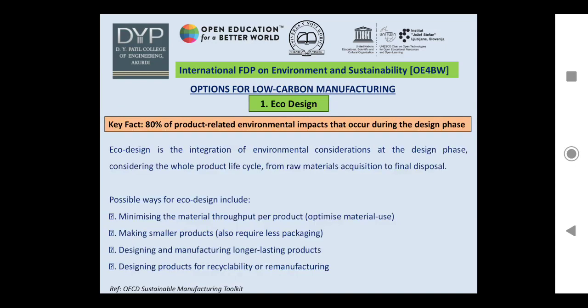The first option is eco design. A key fact is that 80% of product-related environmental impacts occur during the design phase. Eco design is the integration of environmental considerations at the design phase, considering the whole product life cycle from raw material acquisition to final disposal. Possible ways include minimizing material throughput per product, making smaller products requiring less packaging, designing longer-lasting products, and designing products for recyclability or remanufacturing.